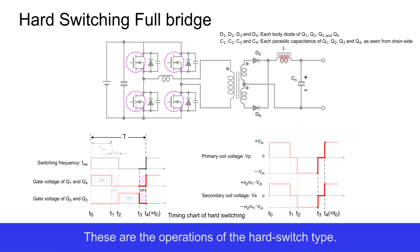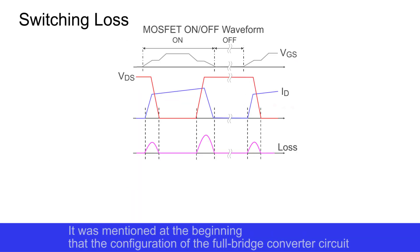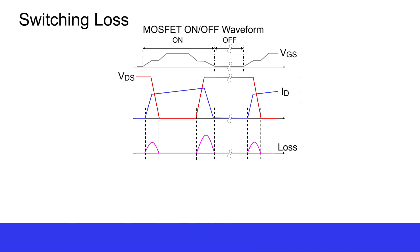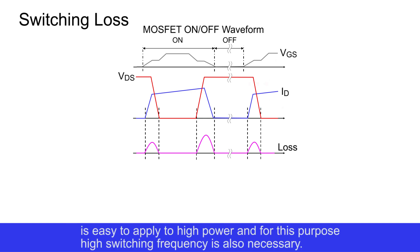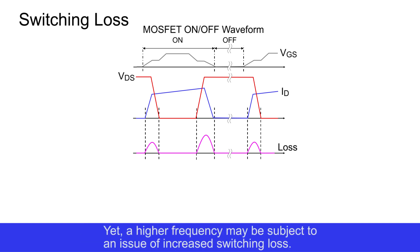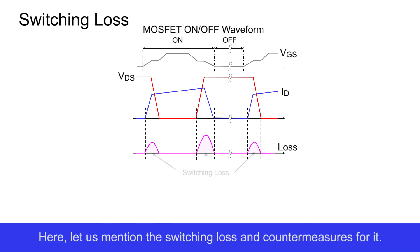These are the operations of the hard switch type. The configuration of the full bridge converter circuit is easy to apply to high power, and for this purpose, high switching frequency is also necessary. However, a higher frequency may be subject to an issue of increased switching loss. Let us mention the switching loss and countermeasures for it.